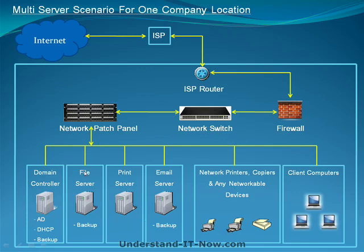The primary difference in this diagram is that rather than putting all the load of file, print, and email into one server, you divide it between four different servers. You have your domain controller running Active Directory to manage users, DHCP to manage IP addresses, and backups. Then you have your file server with a large hard drive and backups, your print server solely for printing, and finally your email server, which also gets backed up. This is the ideal situation for a single location small business setup.